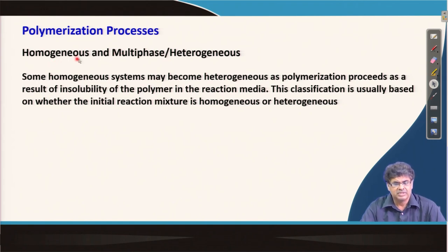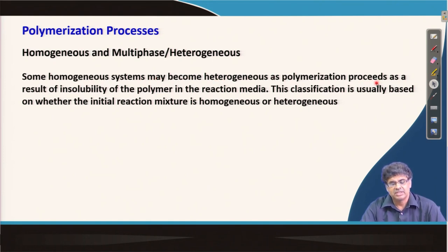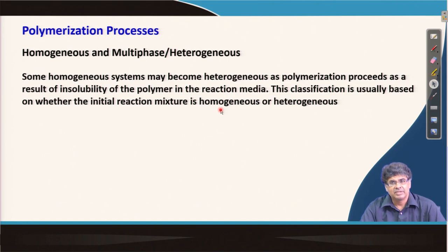There could be two possibilities: one is homogeneous, and the second is either heterogeneous or multiphase. Some homogeneous systems can become heterogeneous as polymerization proceeds, because the resulting polymer may not be soluble in the reaction medium. As a result, the polymer might precipitate and the solution might become heterogeneous from homogeneous. But usually, we classify the polymerization process by looking at the initial behavior or initial phase of the reaction mixture.